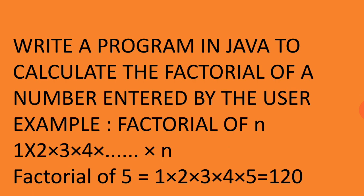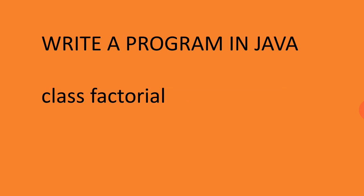Factorial of 5 will be 120, that is 1×2×3×4×5 equals 120. So we'll discuss the program now. First line says write a program in Java.